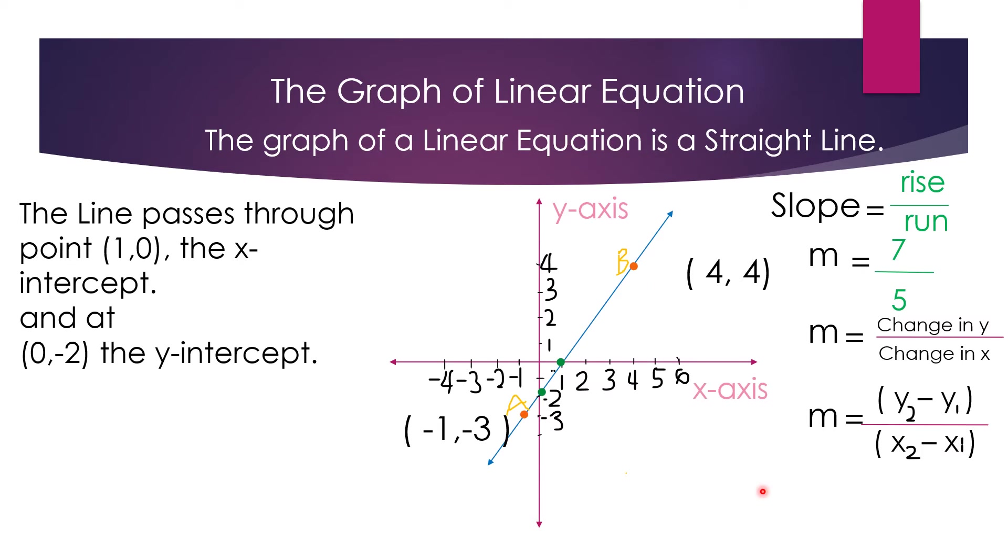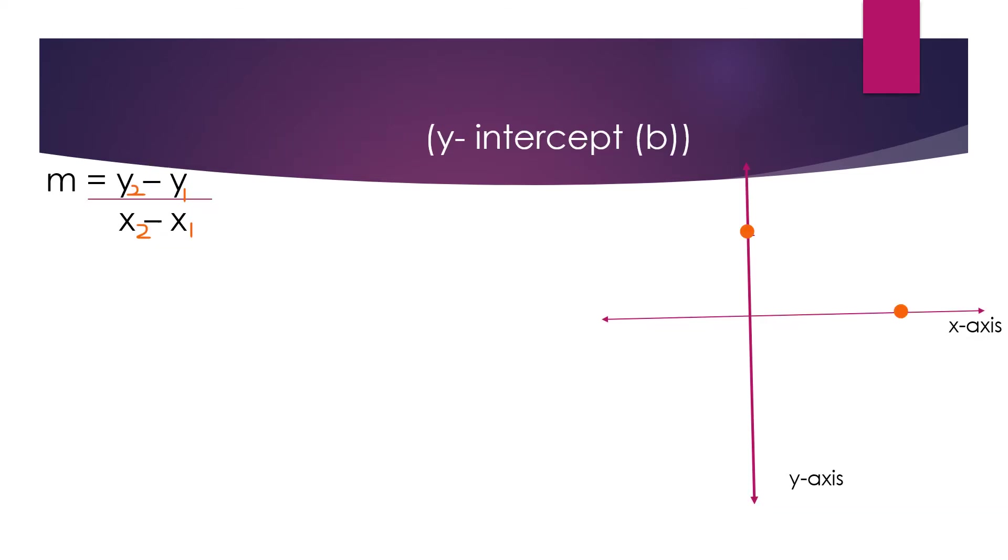Okay, now, if you're going to get the slope of the line using this formula, let's see if we get the same answer. So, this is our x sub 2, this is our y sub 2. This is x sub 1, and this is y sub 1. Okay, so let's apply that in this formula. So, m is equal to negative 3 minus 4, and that is negative 1 minus 4. So, that is negative 7 over negative 5.